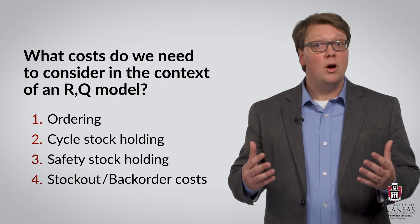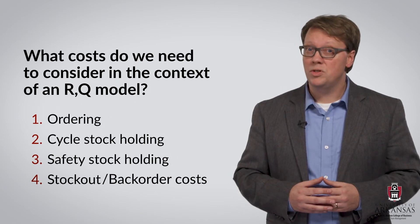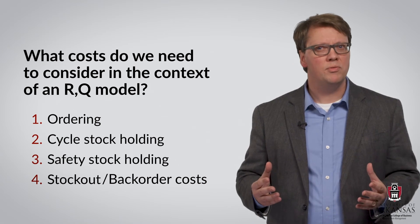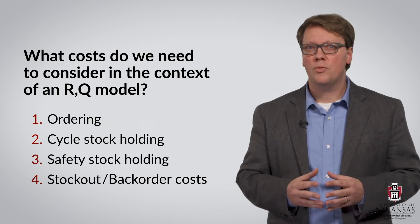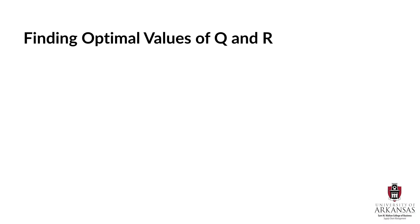We take all four cost components into account when deciding on our two key parameters, the reorder point R and the order quantity Q. Of course, the optimal values of Q and R are those values that minimize the sum of these costs. And we find these optimal values by first setting up and then optimizing the total cost function.